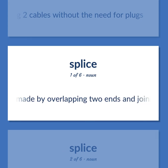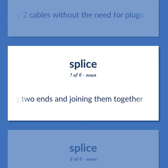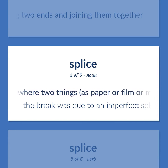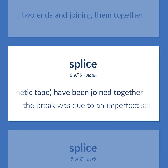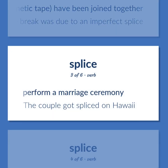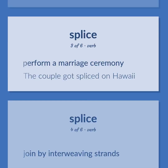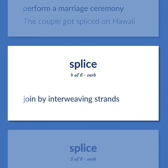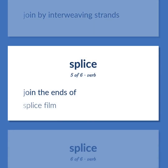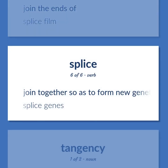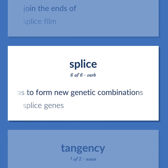Splice: Joint made by overlapping two ends and joining them together. A junction where two things, as paper or film or magnetic tape, have been joined together — the break was due to an imperfect splice. Perform a marriage ceremony — the couple got spliced on Hawaii. Join by interweaving strands. Join the ends of — splice film. Join together so as to form new genetic combinations — splice genes.